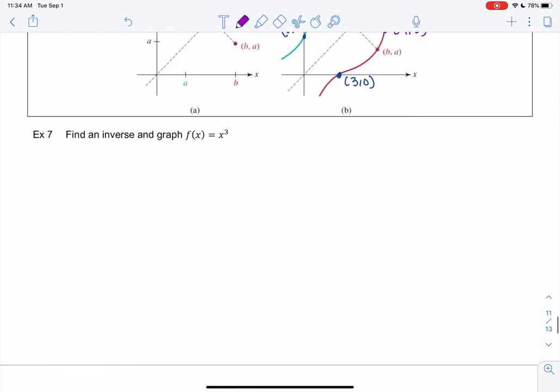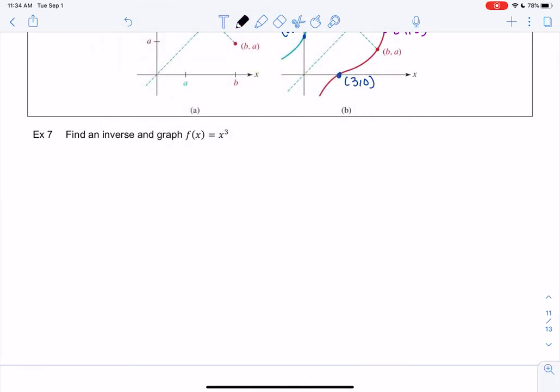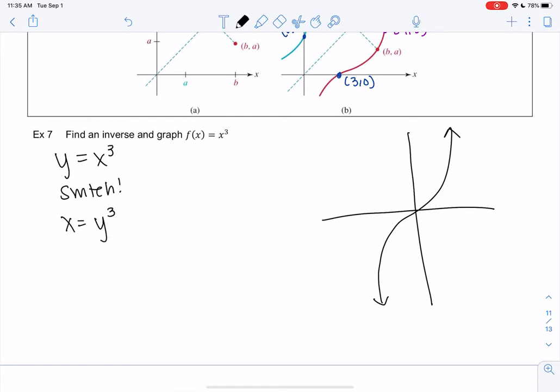Let's look at x³. We know what x³ looks like on a graph. But what would the inverse look like? We have y = x³, we're going to switch, so x = y³. We solve this by doing a one-third power, which is a cube root. So y = x^(1/3), that's my inverse.